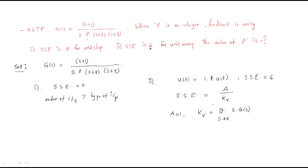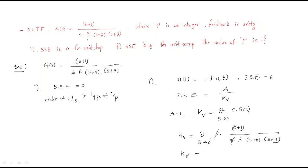The steady-state error is given as 6. First find Kv. Kv equals the limit as s→0 of s times G(s), where G(s) = (s+1) / [s · P · (s+2) · (s+3)]. The s terms cancel, then substituting s=0: numerator gives 1, denominator gives P·2·3.